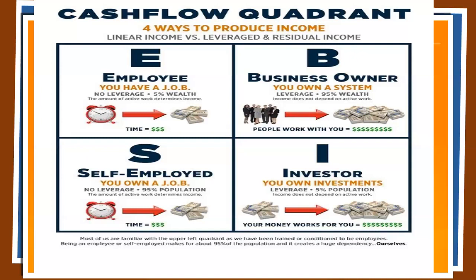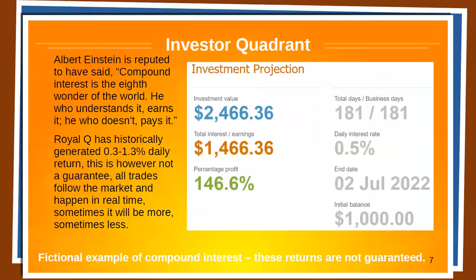This is really scalable because with the profits you can open more and more franchises, employing more people and producing more cash flow. Or consider the investor quadrant — where your money is working for you. A good example is buying a real estate property that produces cash flow each month, a stock that produces dividends, or having a trader trade your money so you make money on your money. In Royal Q, it's possible to become both a business owner and an investor.